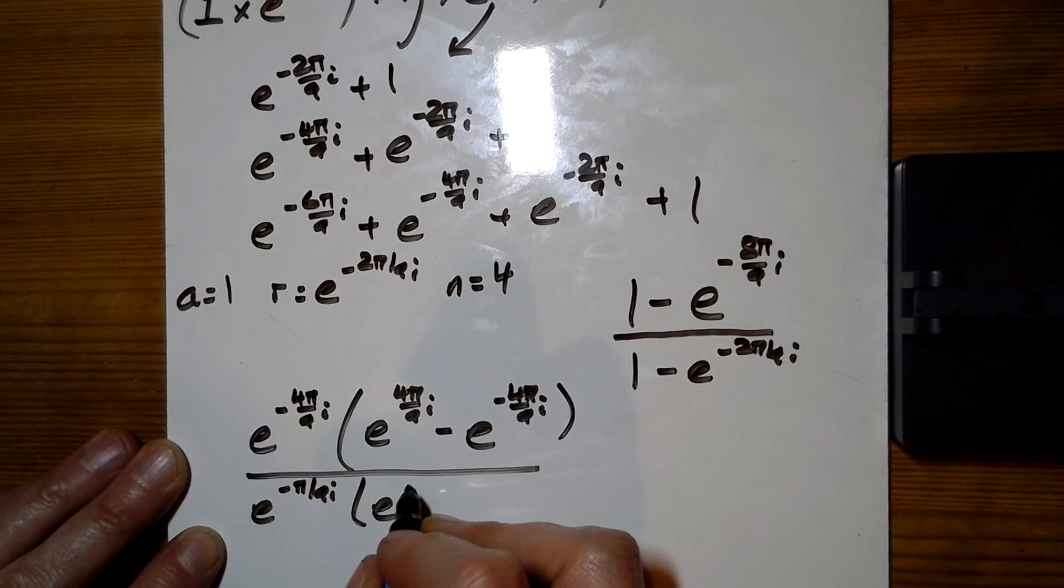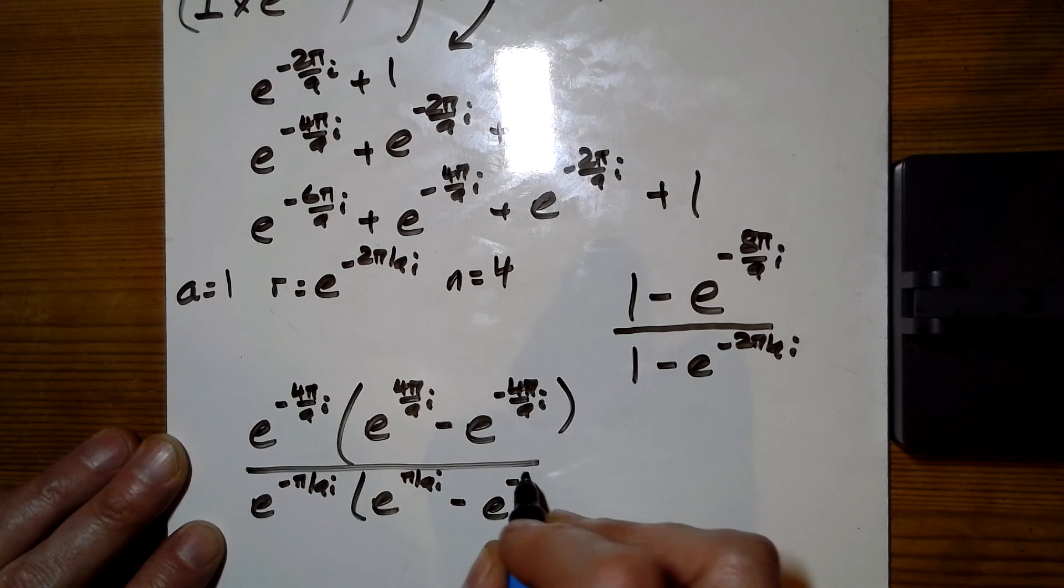And we've got positive pi over 9i there, because they times together, they'll make 1, and another negative minus pi over there.